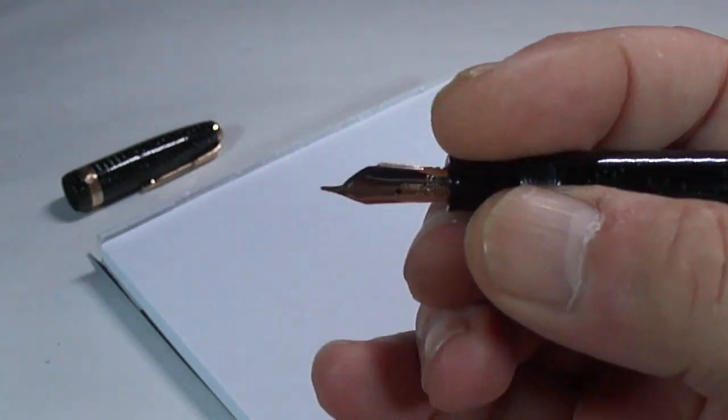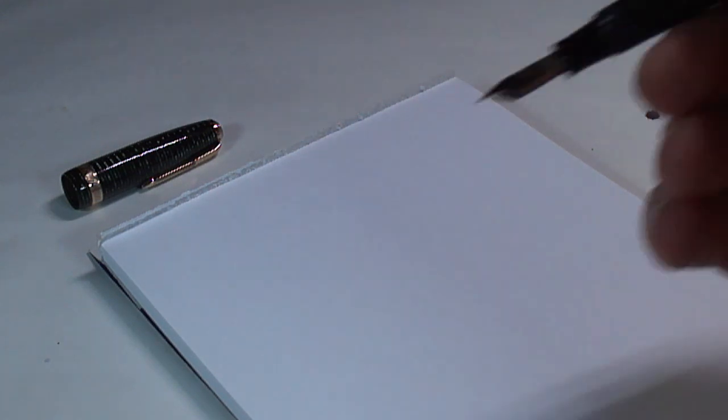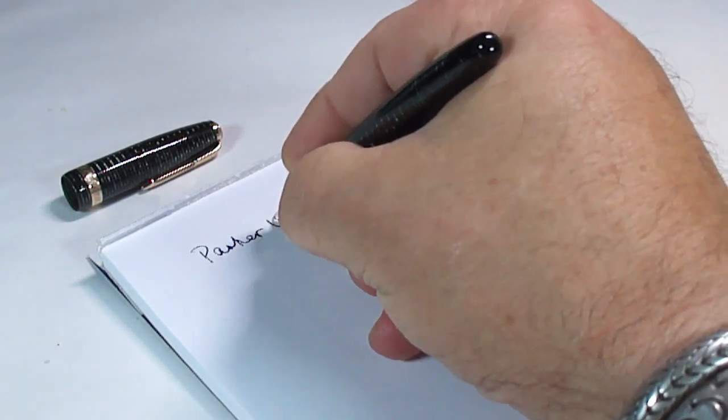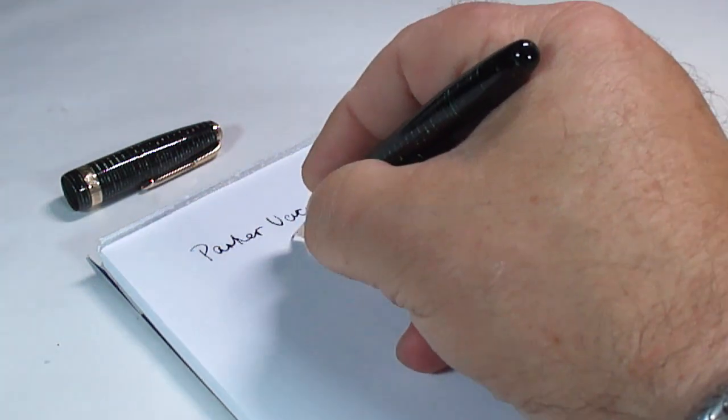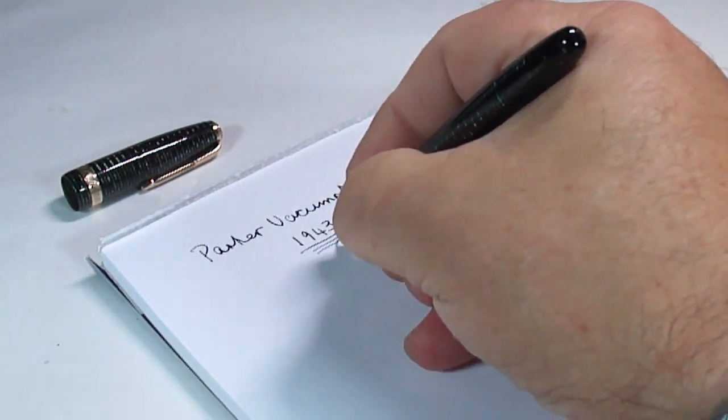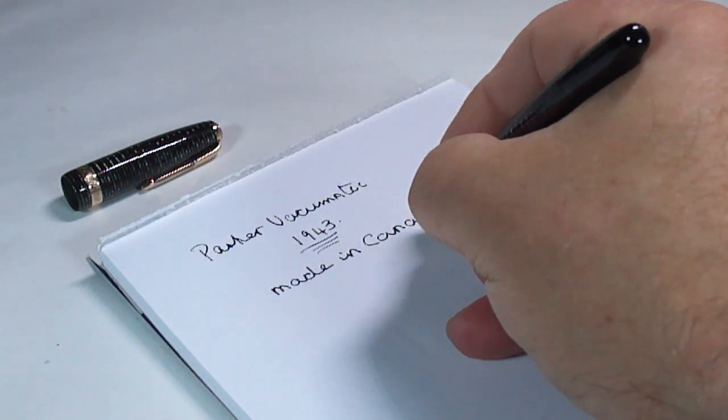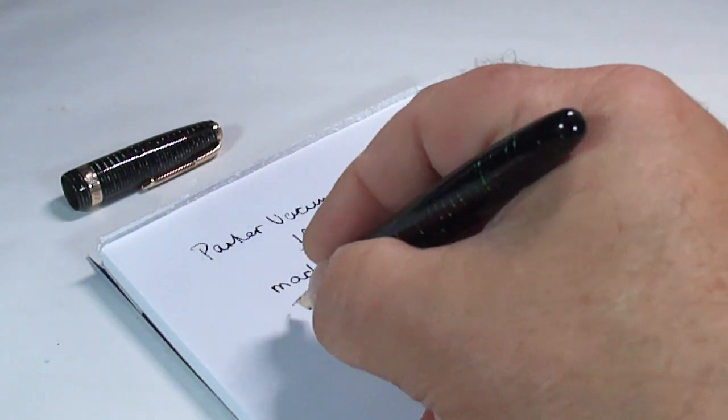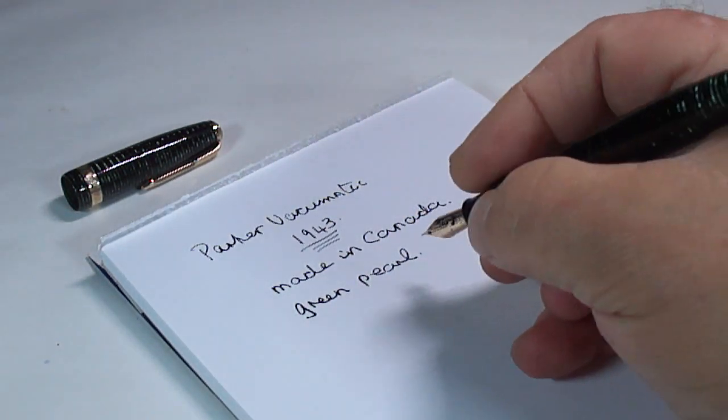It'll be interesting to see how the pen actually writes. Now, he did actually ask for a medium, well, fine or medium, and looking at the nib, I think it might be a fine line. So what we're going to do, we'll do a dip test. So what we have is a Parker Vacumatic, as we've said before, this one is from 1943. And as we've just showed you, made in Canada. And the color of this pen, on these vacuumatics, this one is what they term as green pearl.